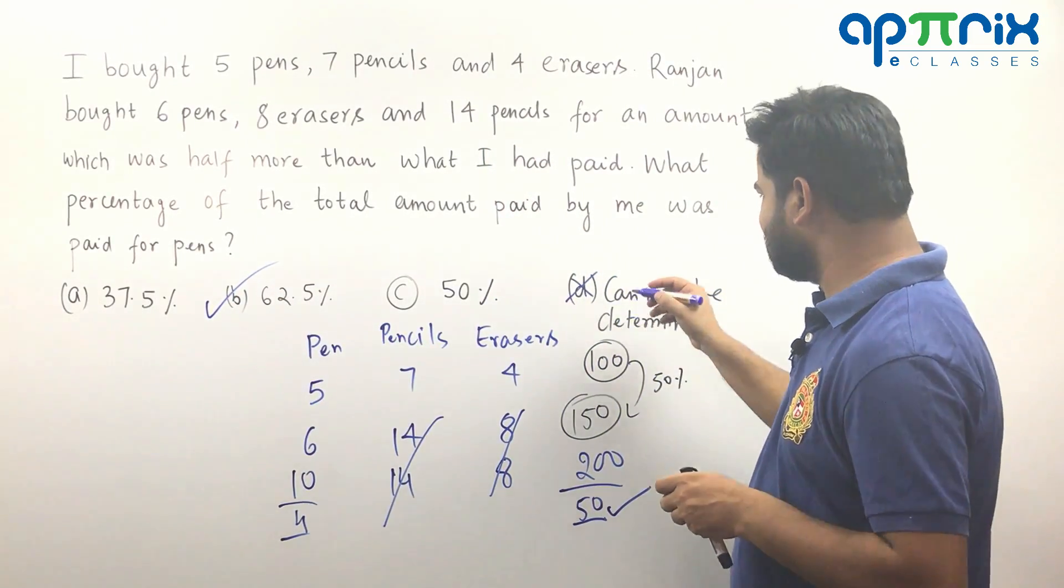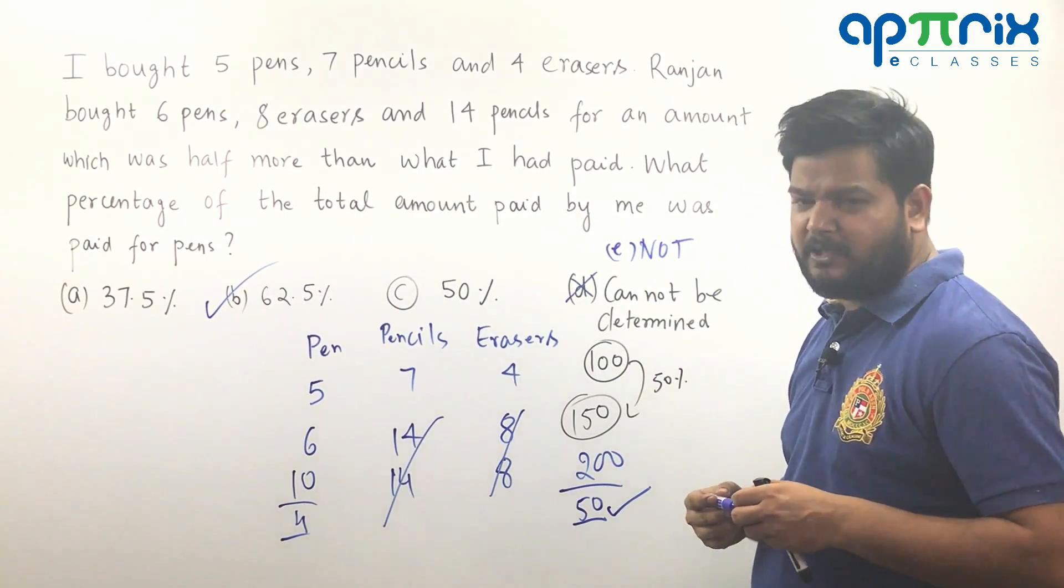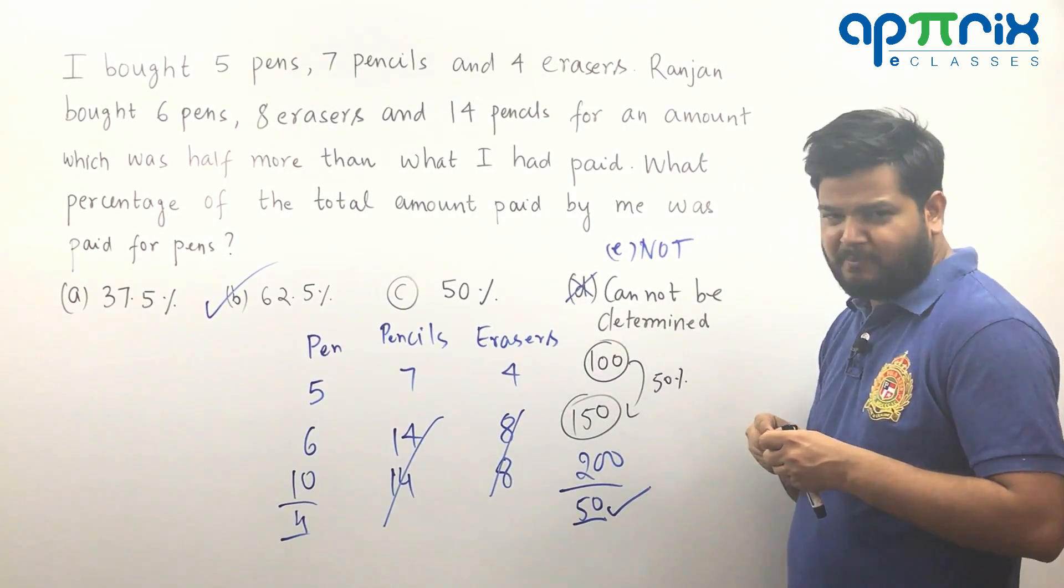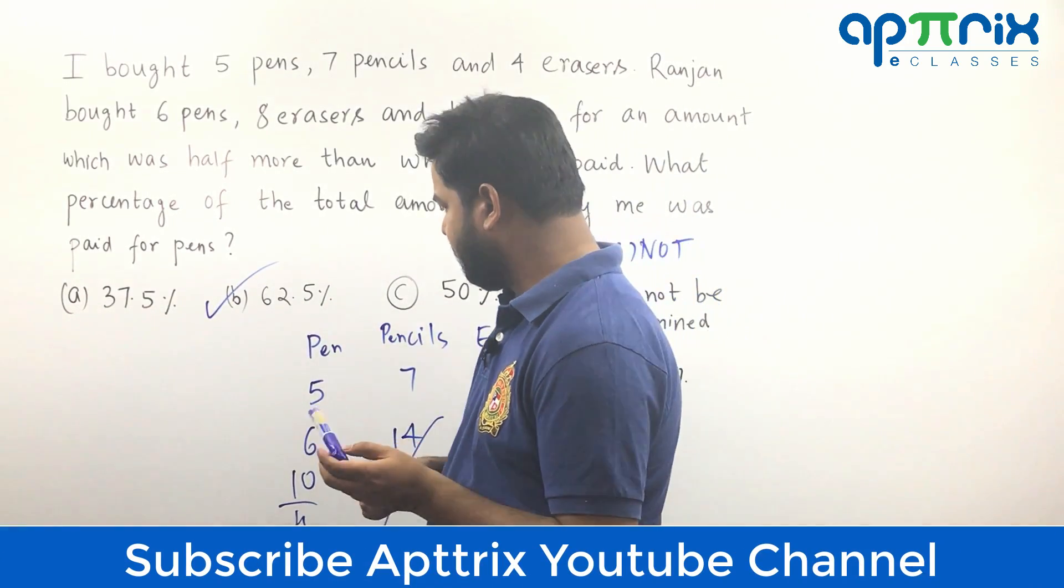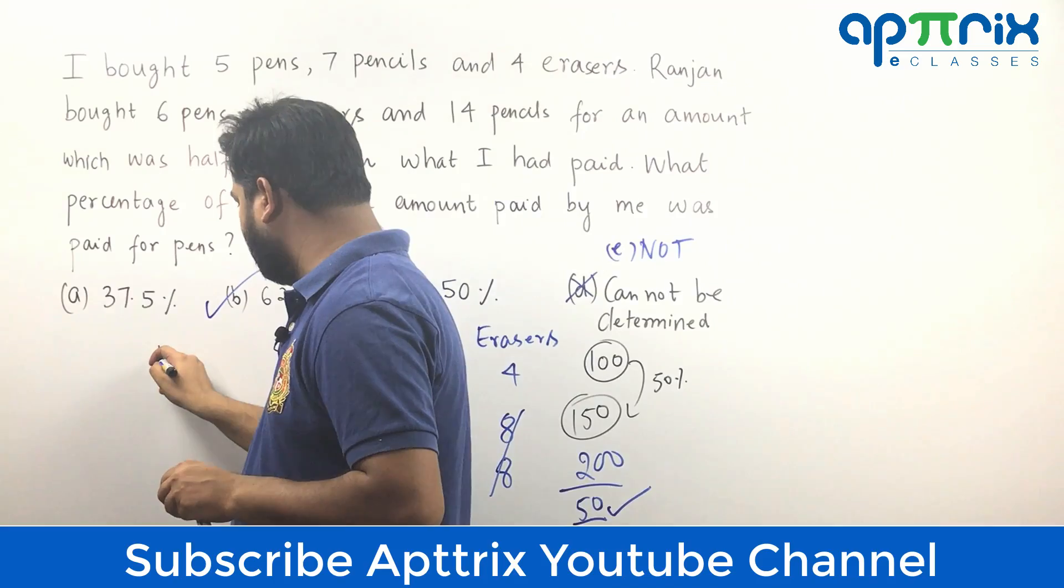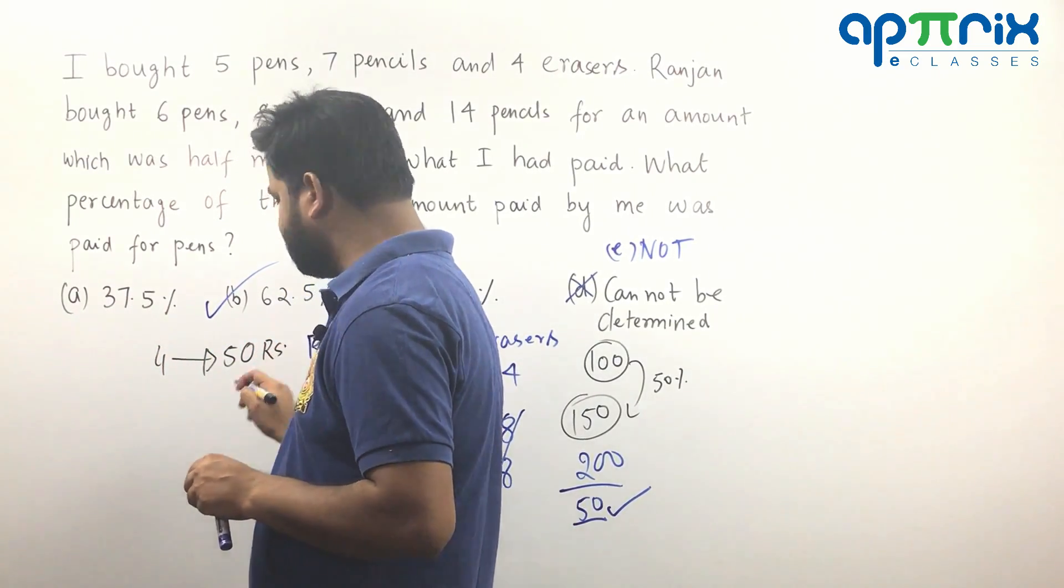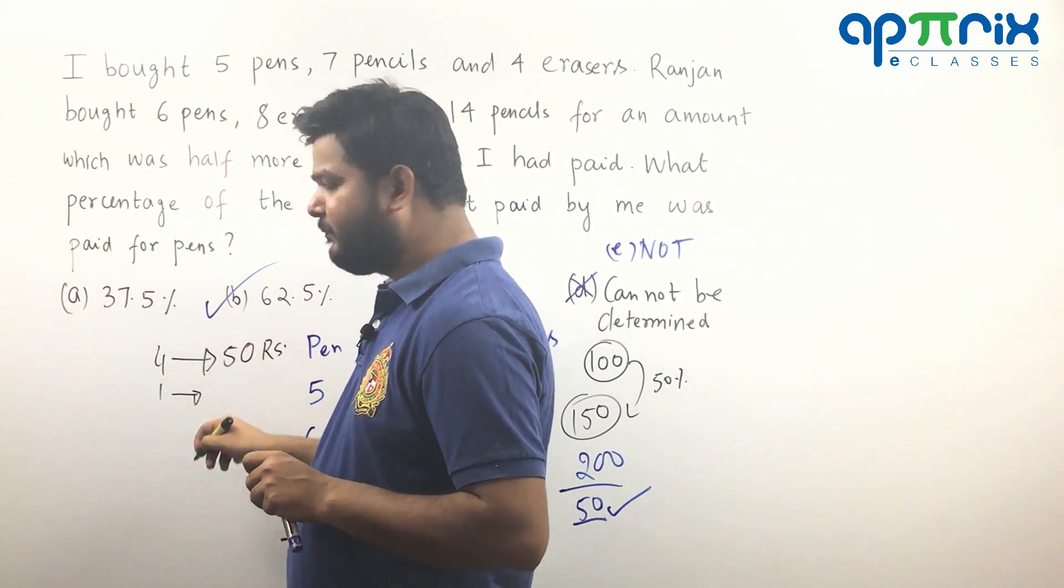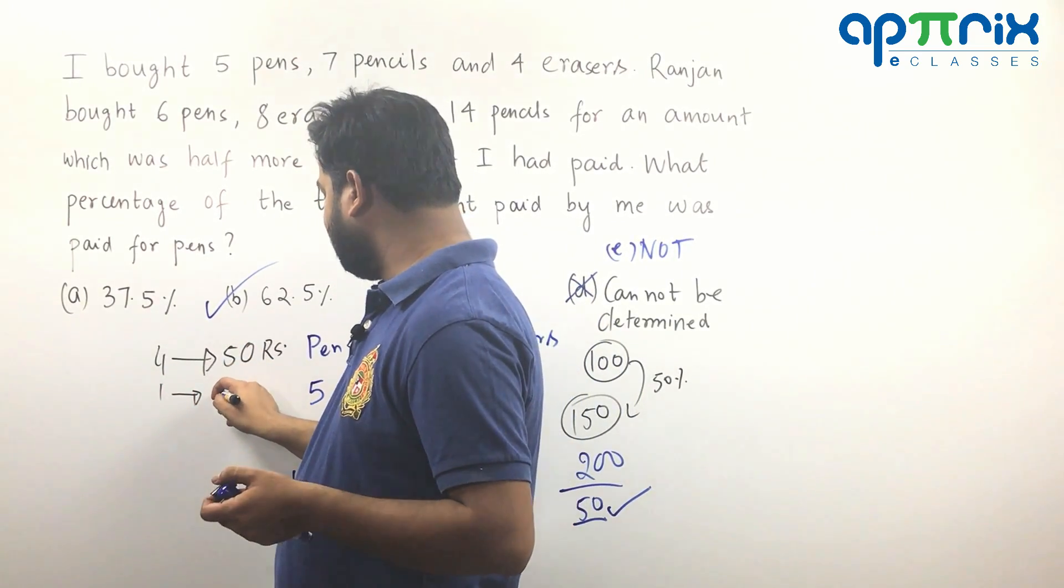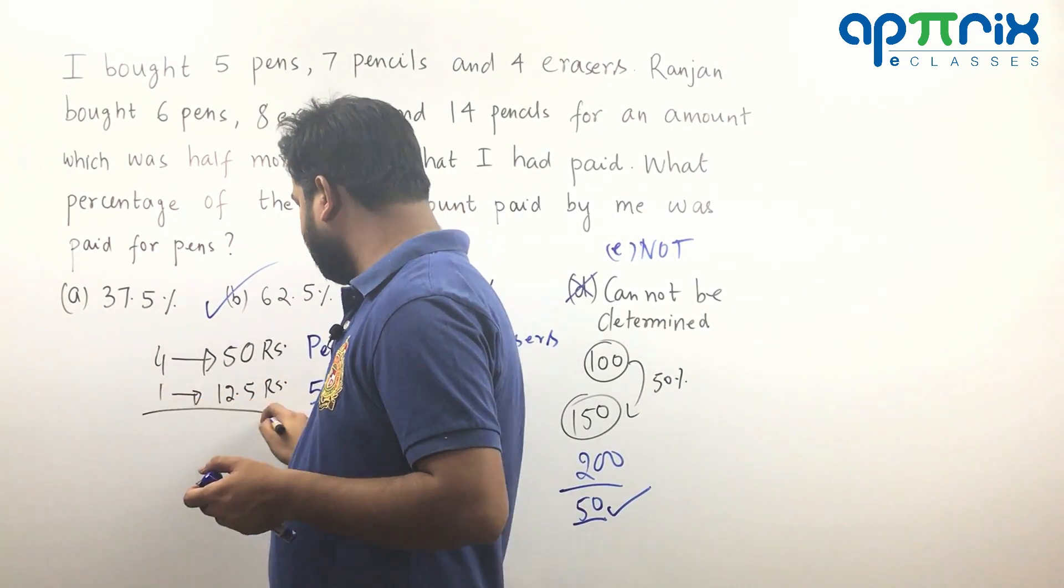Suppose if one more answer is given, none of these, let's say N.O.T. is also given, none of these. Then might be you need to work little bit more to calculate it exactly and I will show you how you can do it without any problem. If you got that 4 is actually having total cost price to be 50 rupees, so what will be the cost price of one more? It will be 50 by 4. That is half of 25 or you will call it to be 12.5 rupees.